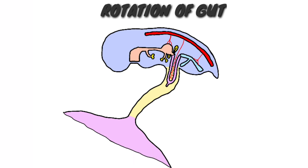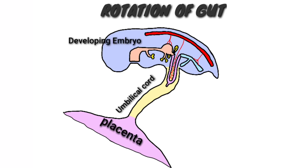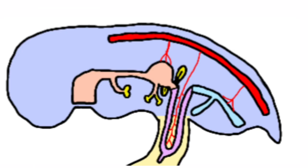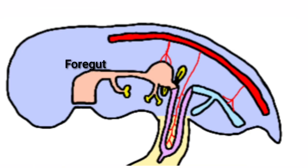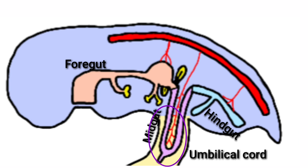See this diagram. This is placenta, this is umbilical cord, and this is the developing embryo. This whole developing gut is divided into three parts: the foregut, midgut, and hindgut. But in the early stage of development, the midgut projects or herniates into the umbilical cord as shown in the diagram.